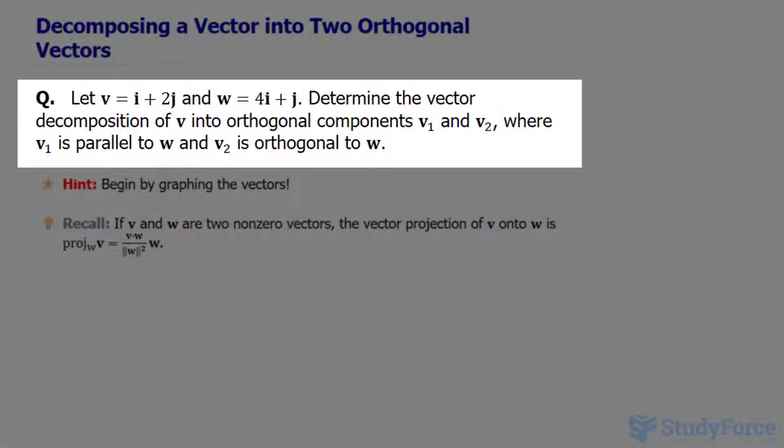The question reads: let V equal i + 2j and W equal 4i + j. Determine the vector decomposition of V into orthogonal components V₁ and V₂, where V₁ is parallel to W and V₂ is orthogonal to W.